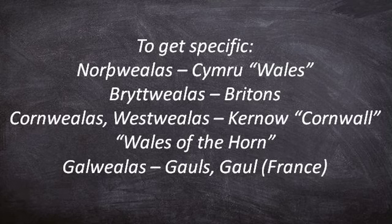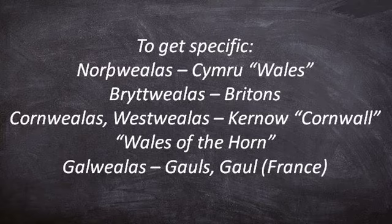To get more specific: North Waelhlas refers to the Cymru — today's Wales. Then we have Brutwallas, meaning Britons. We have Cornwallas and Westwallas, referring to Cornwall, also called Wales of the Horn. And then we have Galwallas, referring to Gaul — what we now call France.